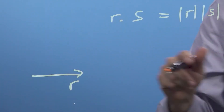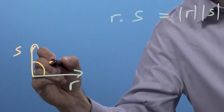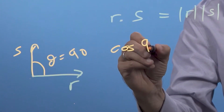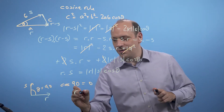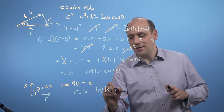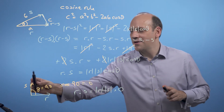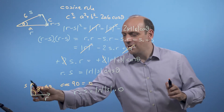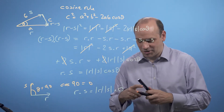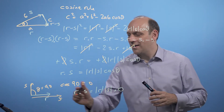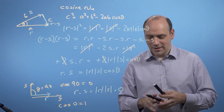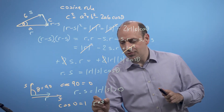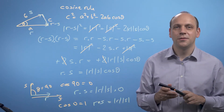If the two vectors on the other hand were at 90 degrees to each other — if r was like this and s was like this, and the angle between them, theta, was equal to 90 degrees — then cos of 90 is 0, and r dot s is going to be some size of r times some size of s times 0. So if the two vectors are pointing at 90 degrees to each other, if they're orthogonal, then the dot product gives 0. If they're both pointed in the same direction and the angle between them is 0, cos of 0 is 1, and r dot s is equal to mod r times mod s.